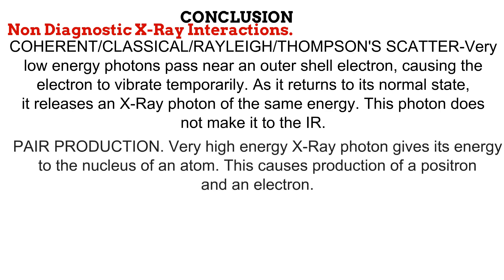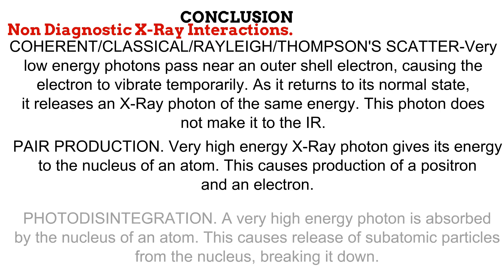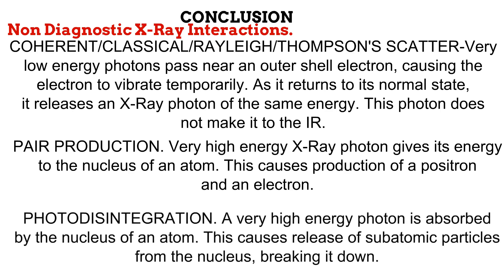Next is pair production. In this, the incoming photon has an extremely high energy, much higher than that used in conventional diagnostic radiography. This photon passes its energy to the nucleus of an atom, causing the nucleus to produce a pair of subatomic particles — one positron and one electron. The next type of interaction also occurs at extremely high photon energy: photodisintegration. In this, the photon is absorbed by the nucleus of an atom, causing the nucleus to break down and release its subatomic particles.